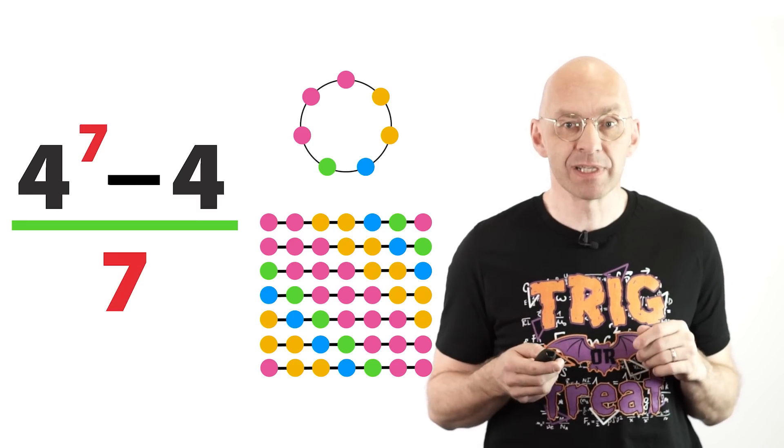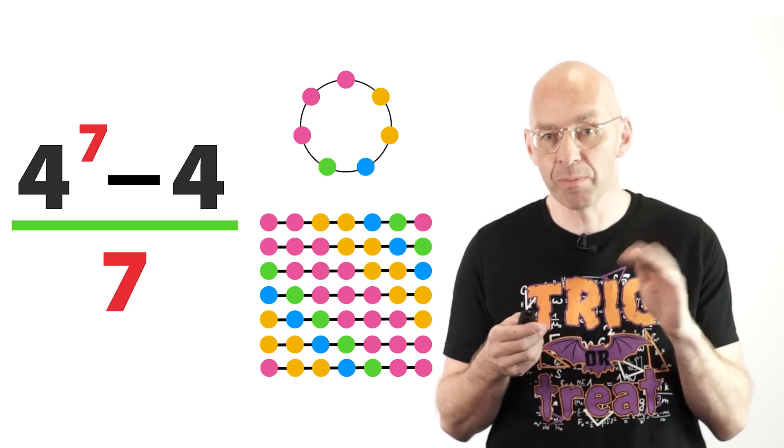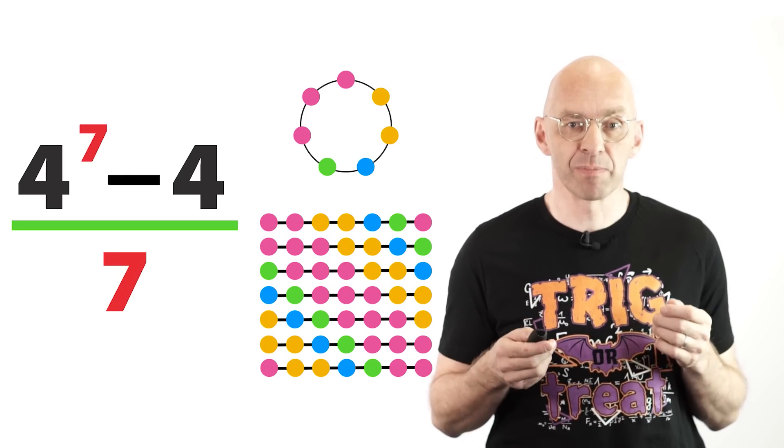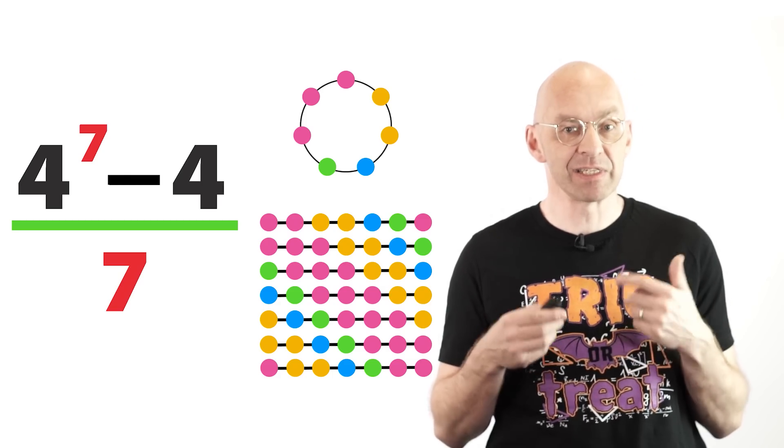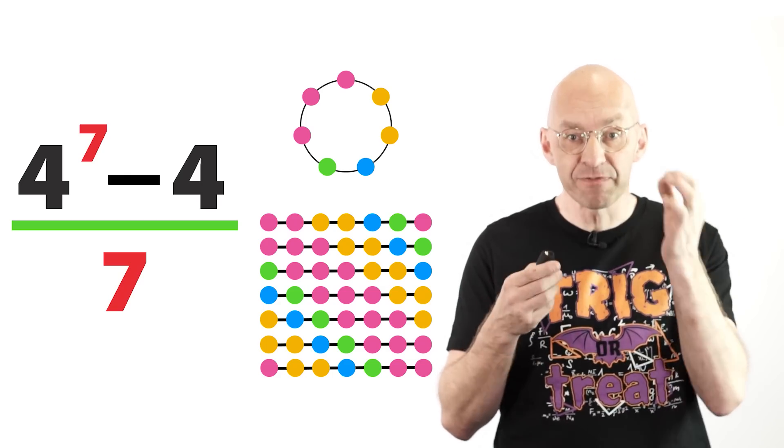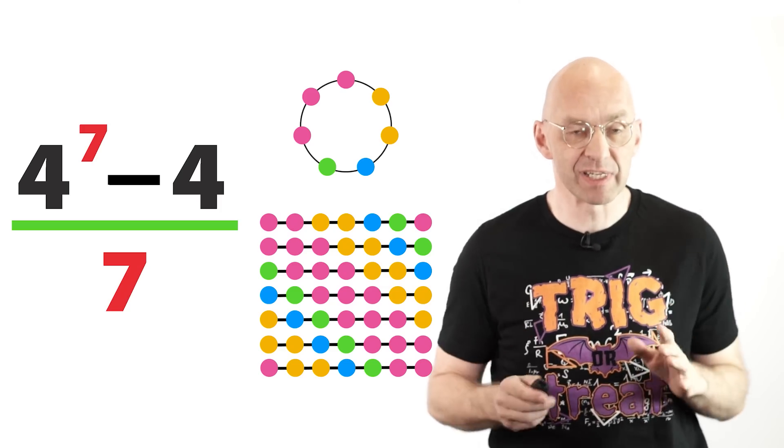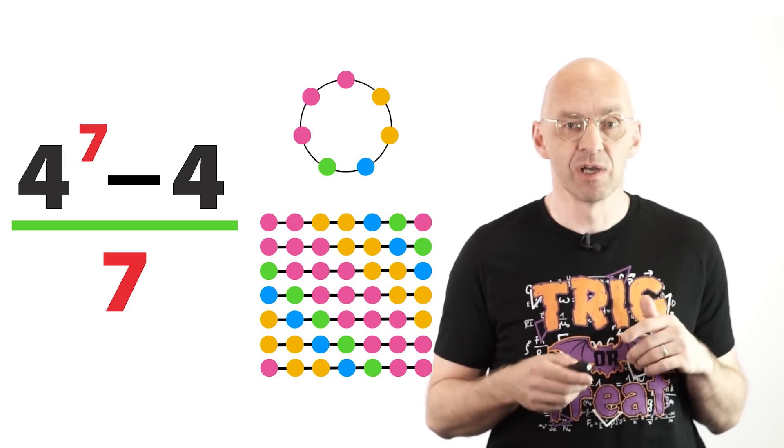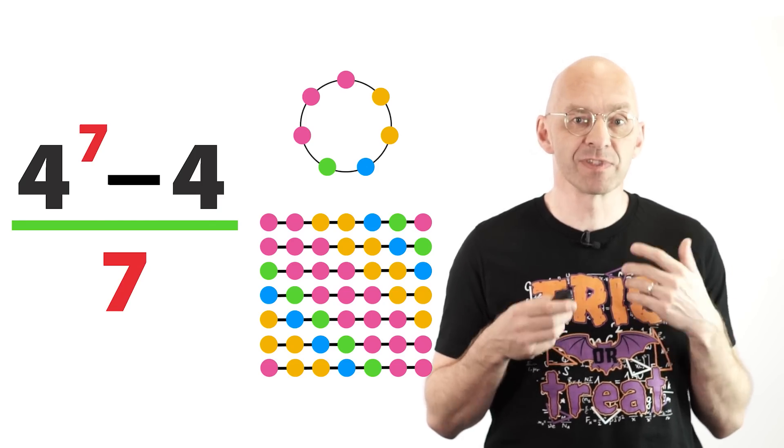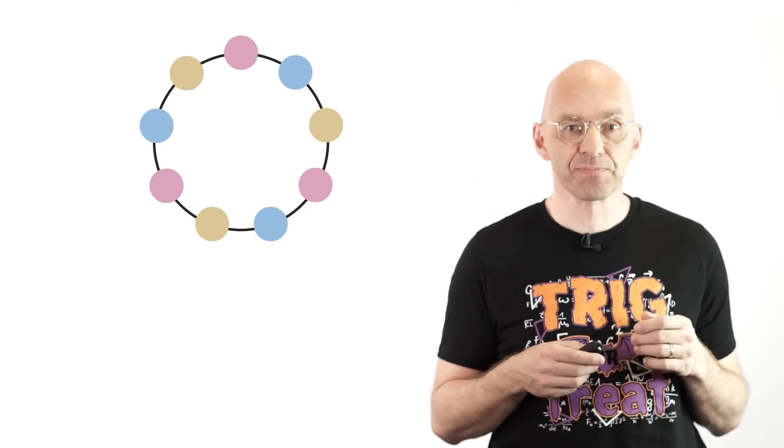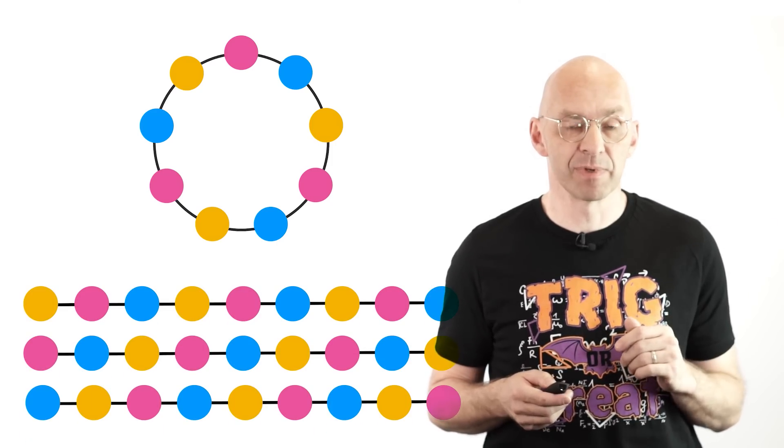So where can our proof go wrong if we don't use a prime number? Well, the problem is that if we replace our prime number 7 with a composite number, then not all strings that we get by cutting a necklace are necessarily different. And obtaining seven different strings for each necklace was absolutely critical for our counting argument. For example, if we use nine beads instead of seven beads, one possible necklace looks like this. In this necklace, things repeat every three beads, which means that when we cut this necklace in all possible ways, we only get three different strings rather than nine.